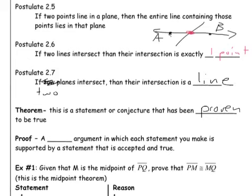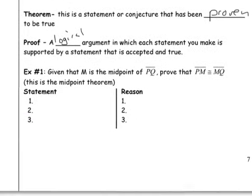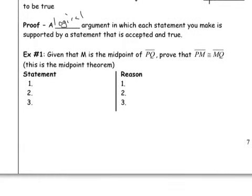And a proof is a logical argument in which each statement you make is supported by a statement that is accepted and true. So I'm going to give you an example of a proof here in just a second.